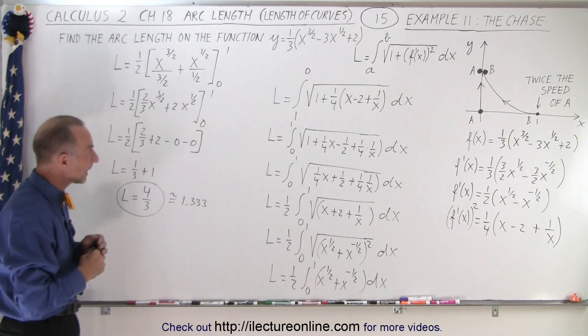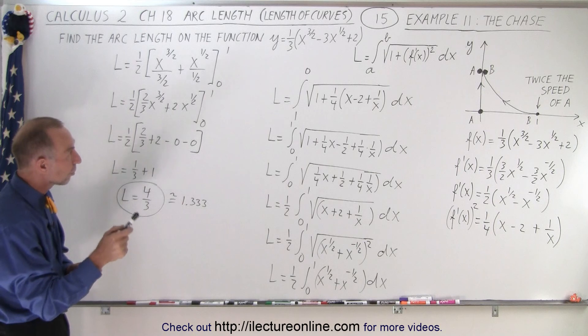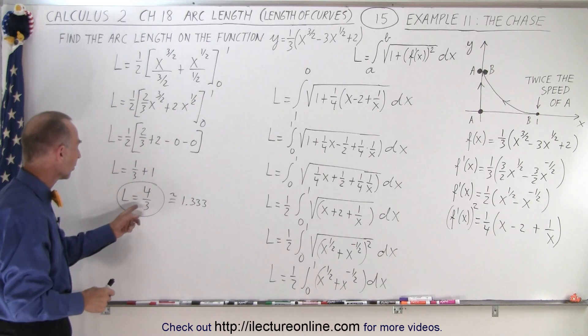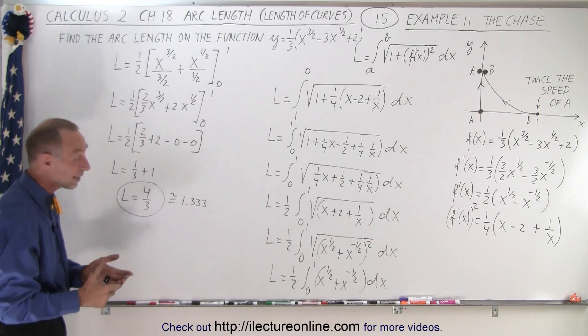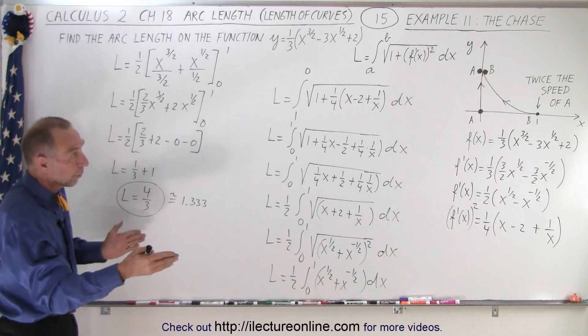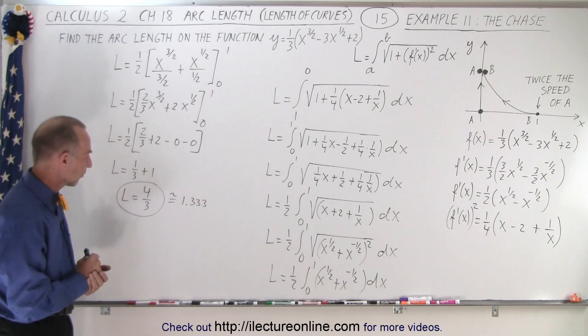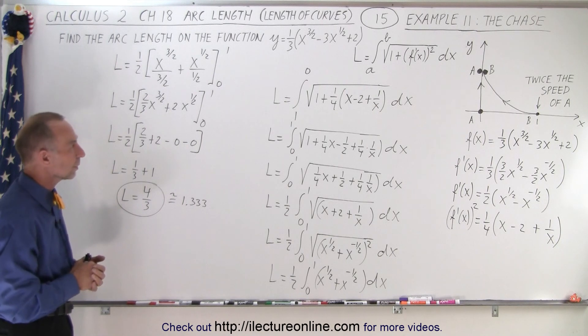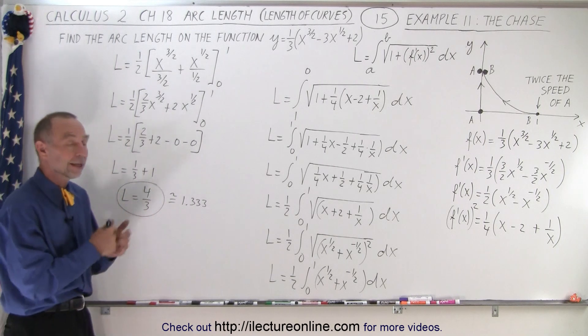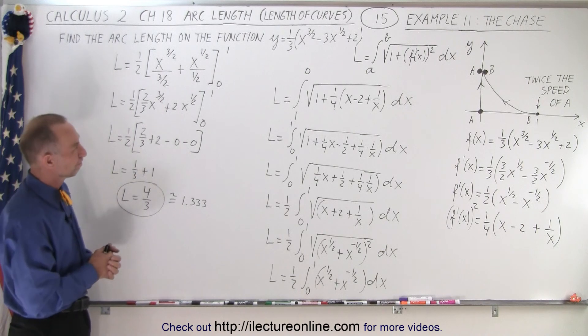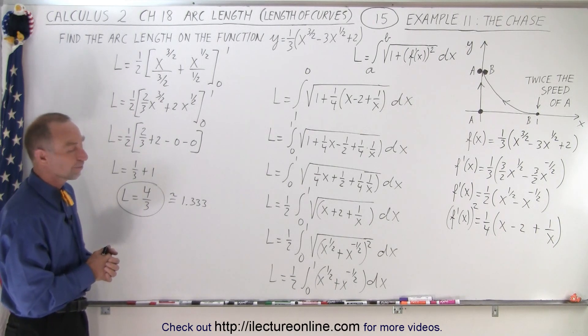All right, there we go. So the distance that B travels before it catches A is a little bit over one, 1.333, and that seems reasonable. It's got to be more than one, and it shouldn't be a very big number because B travels twice as fast as A. So that seems like a reasonable answer, but that is, again, how it's done. Fun problem, huh?